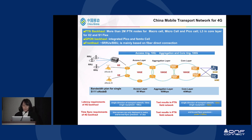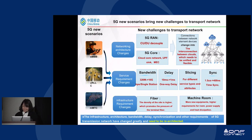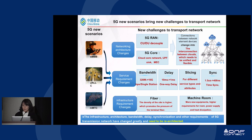When it comes to 5G, new services bring new challenges and requirements. First, the network architecture is changing — for example, CU and DU decoupling, and the sinking of the 5G core into the edge, which changes connections between network elements from device interconnections to cloud interconnections. Secondly, service requirements change in terms of bandwidth, delay, slicing, and synchronization.